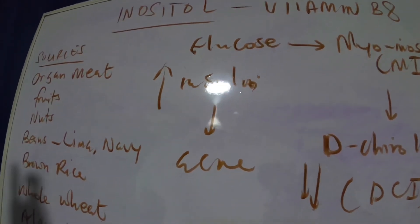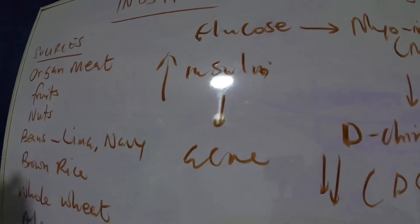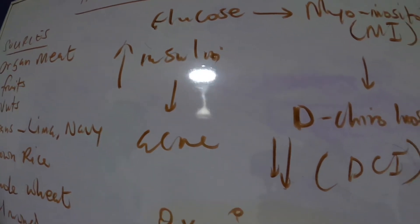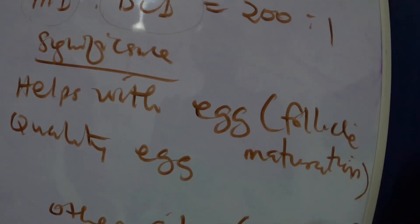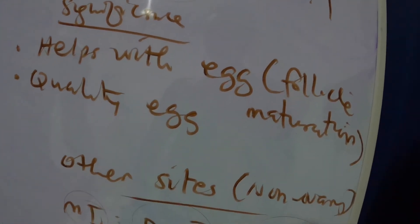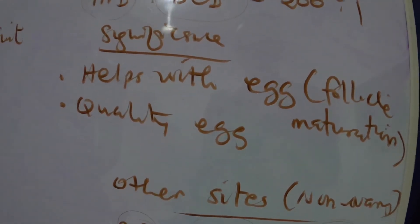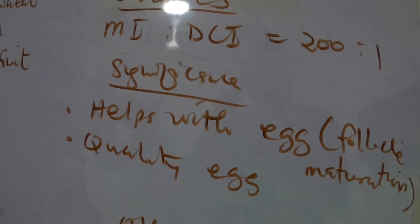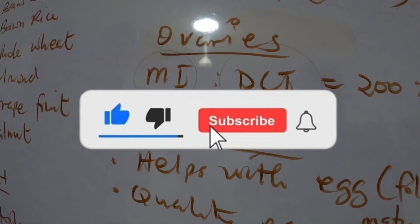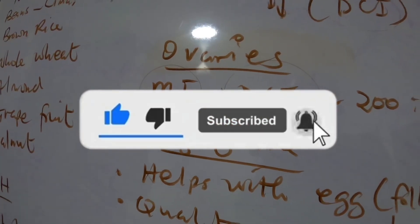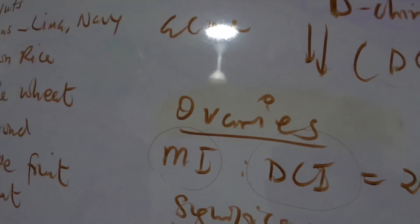So inositol actually has a very good role in people with PCOS. As we can see from the board, it targets virtually all areas of PCOS: it helps egg maturation, it improves the quality of eggs, it also helps with the alleviation of PCOS symptoms, and then also helps with ovulation. These are mainly the symptoms of people with PCOS, so inositol has a very good place in the management of PCOS. Thank you, stay tuned.